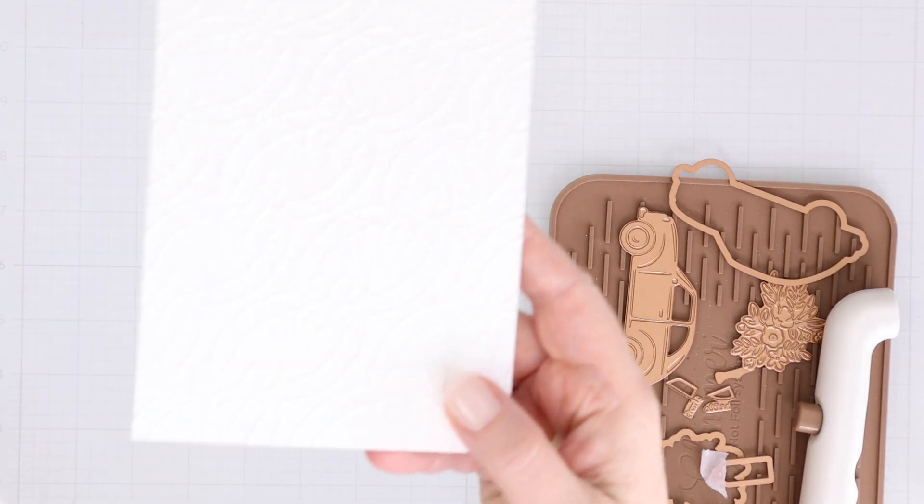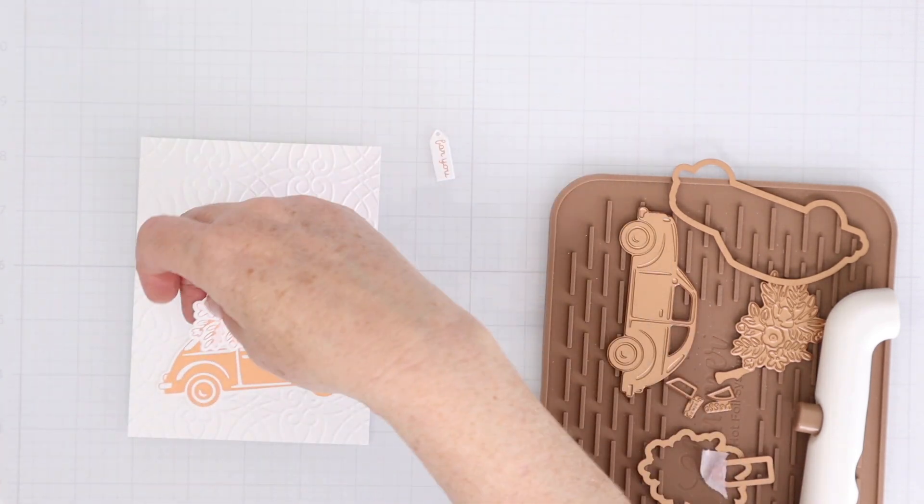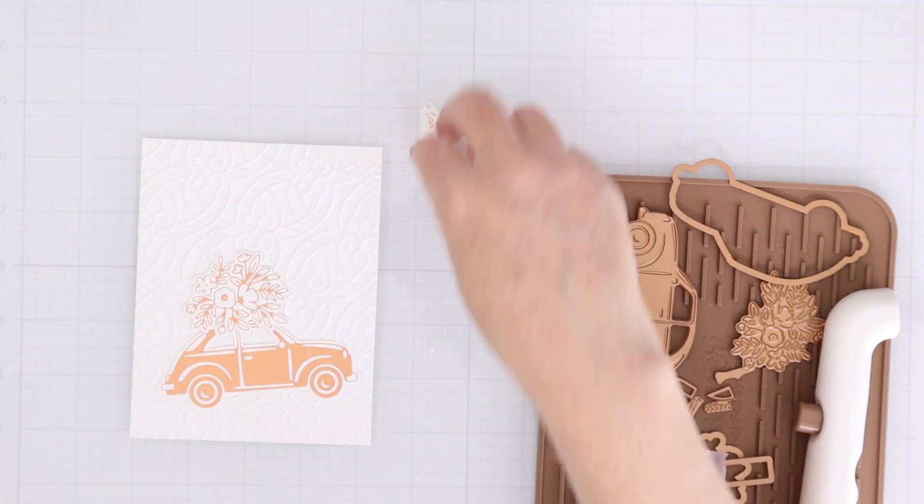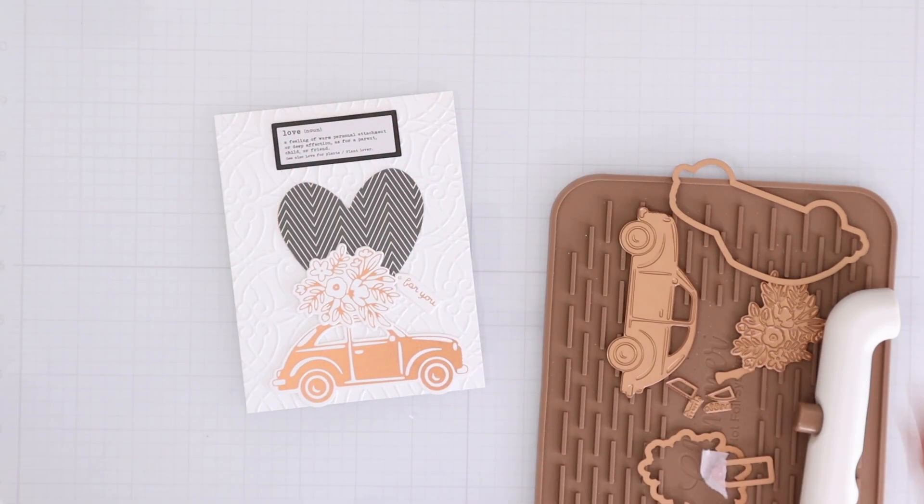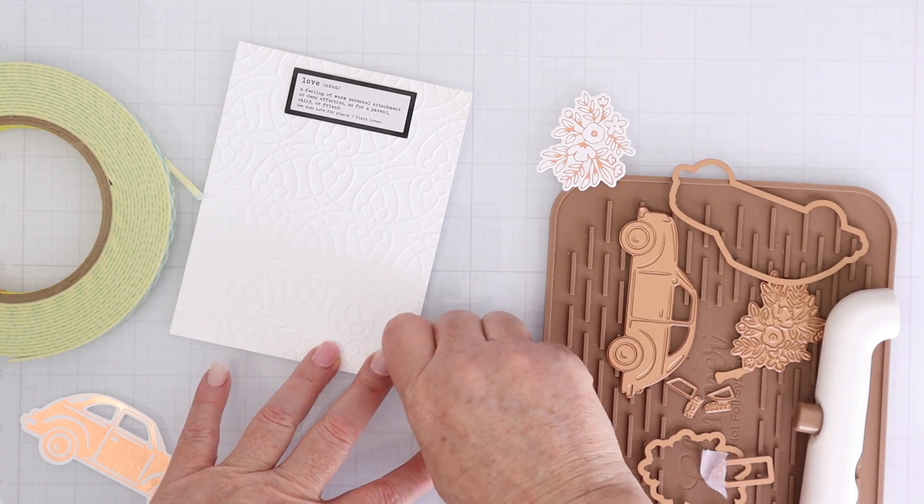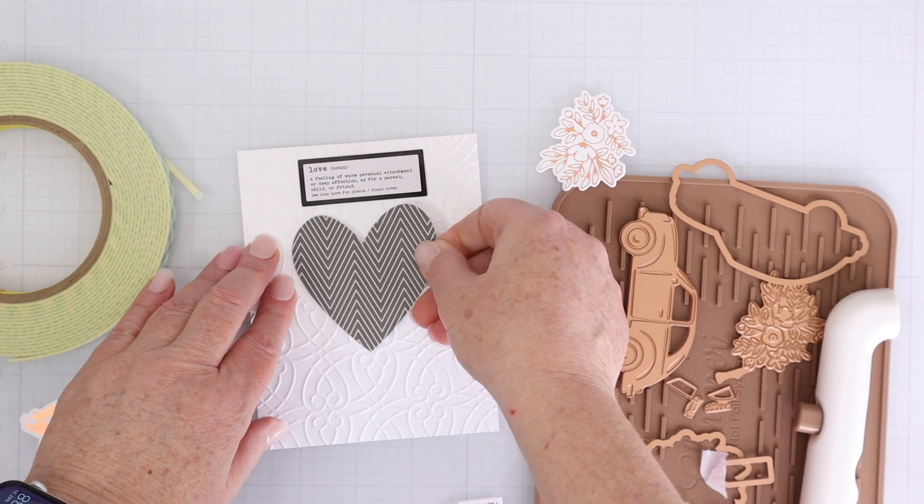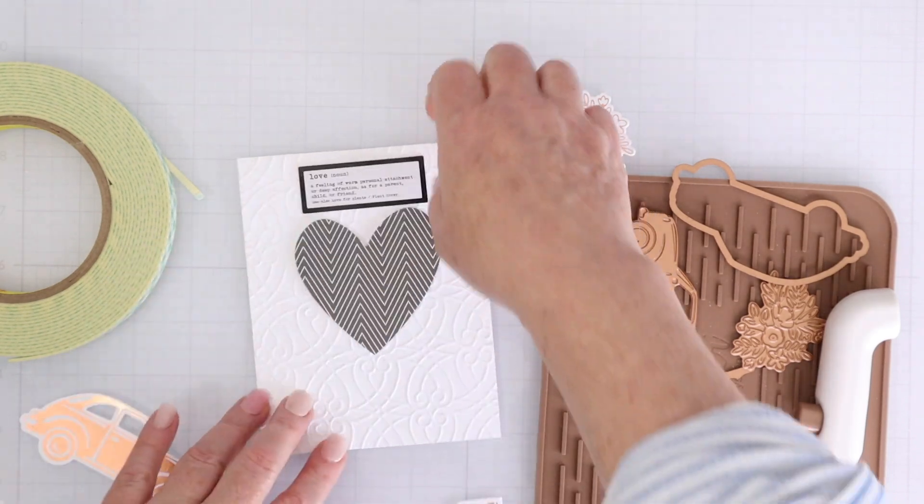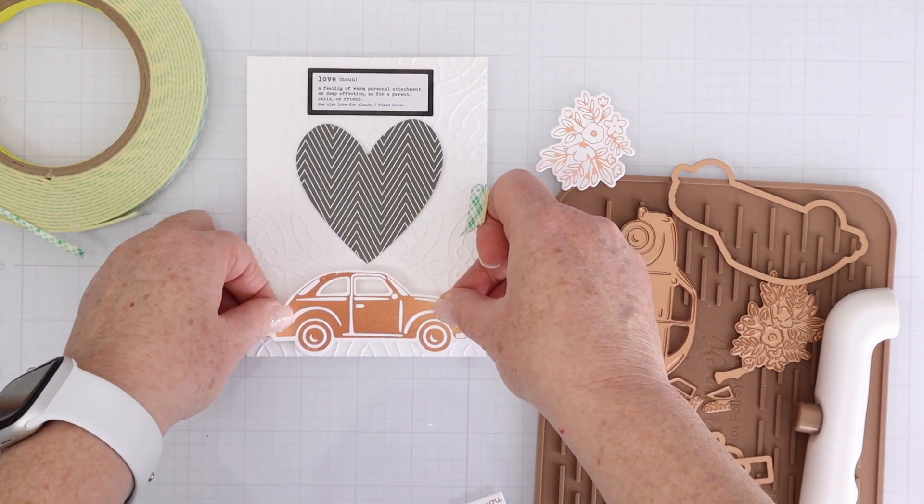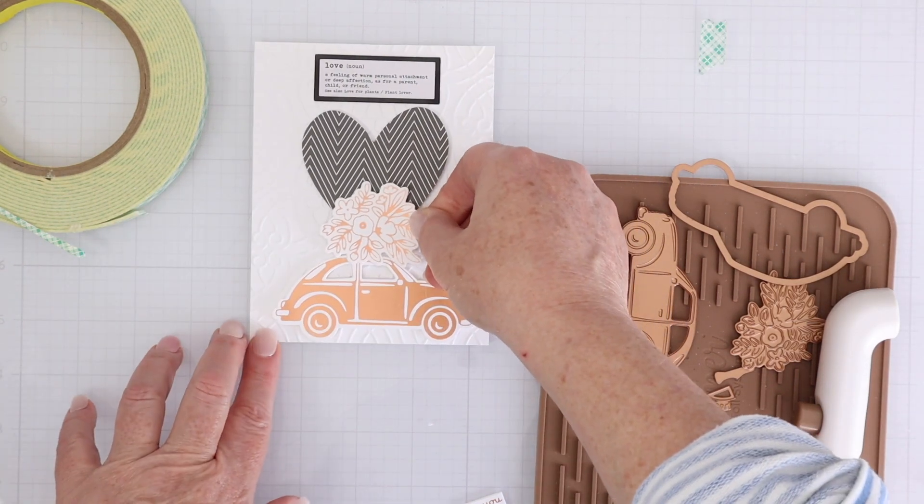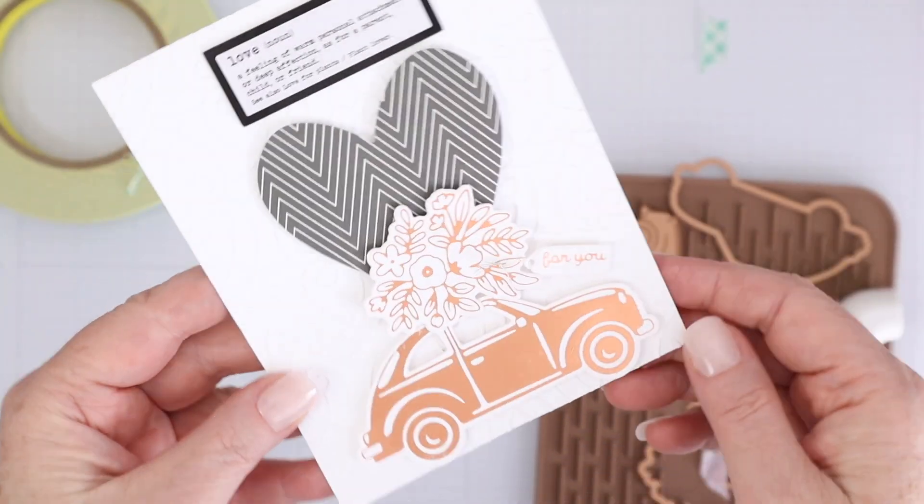Okay so here's a background that I created with the original embossing folder and it's on some white cardstock that matches the white cardstock that I use to foil the car and the flower. I use a chipboard sticker for my sentiment. It's kind of a love message and then a black and white heart and I thought this would be a really great anniversary or wedding announcement card just congratulating somebody or just kind of getting excited about their engagement. So just a fun little innovative set that could be used in lots of different ways.